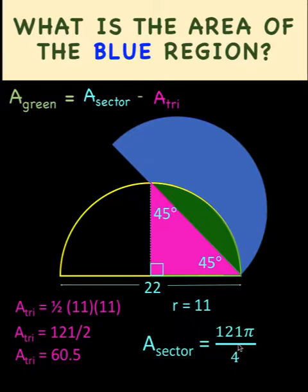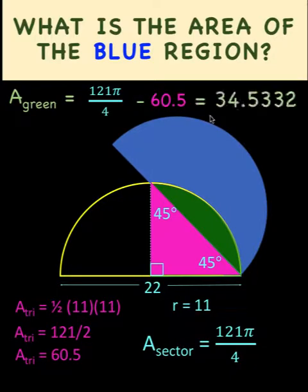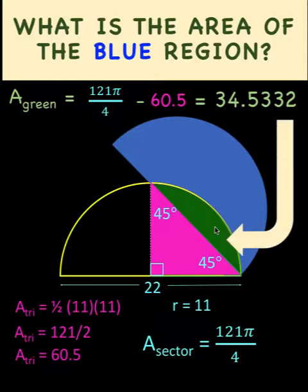So the area of this is 121 pi over 4. The area of the triangle is 60.5. This gives us a preliminary result of 34.5332 for the area of this green shaded region.